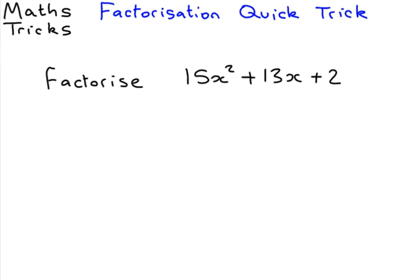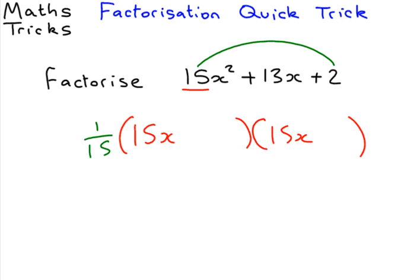Moving on to the next question. As you can see, it's a bit more difficult. Because it's 15x², the method says put 15x, 15x. I know that's not going to work, so we need to divide by 15 to make it okay. Now we do 15 times 2 is 30, and we're looking for numbers that add to make 13 and times to make 30. And our two numbers that work are 3 and 10.